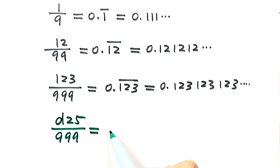Then this just equals 0.d25d25d25d25 and so on.